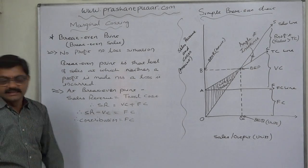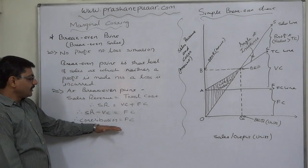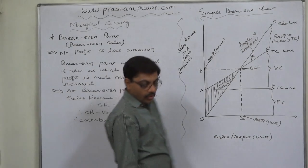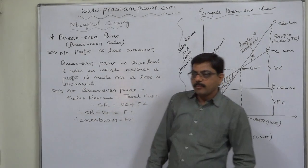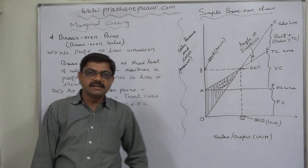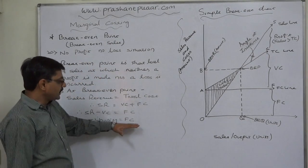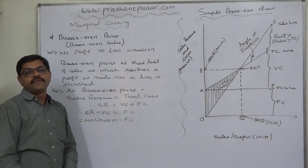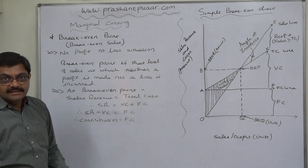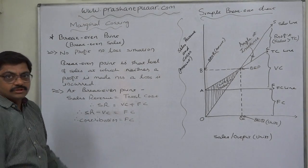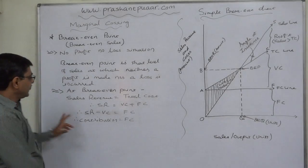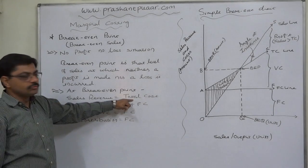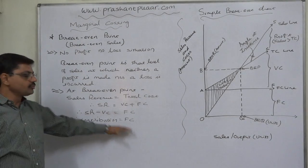Since contribution is exactly equivalent to fixed cost at break-even point, we can ultimately say that at break-even point, contribution equals fixed cost. Our contribution margin is sufficient to recover fixed cost only — no profit is made. So at break-even point: sales revenue equals total cost, and contribution equals fixed cost — that is the no profit, no loss situation.